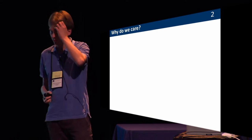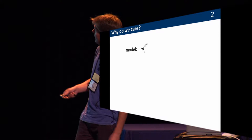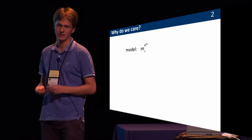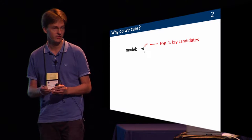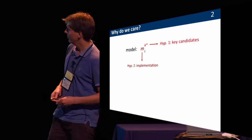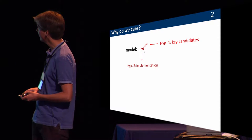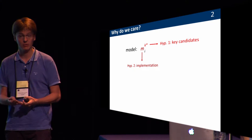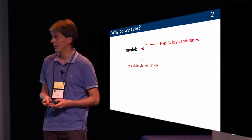I will argue why I think modeling is important. When you look at the model, you have two hypotheses. One is explicit: we make a hypothesis about the key, and that's what we want to recover. But there's also an implicit assumption about the model — about how the device behaves physically. If we want to extract all the information, or if you're an evaluation lab wanting to do a good evaluation, you need the model ideally to be perfect, so that you can really have perfect maximum likelihood attacks.